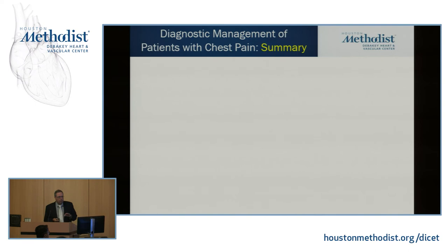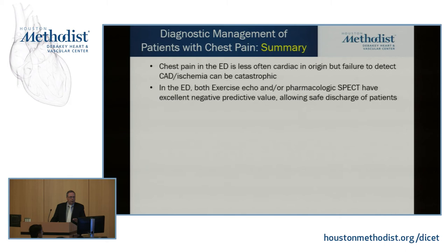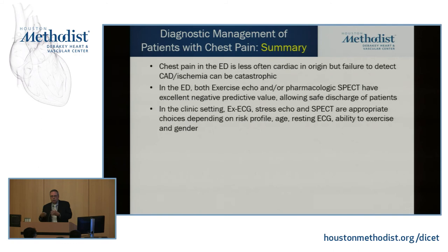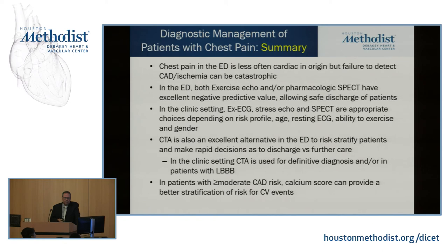In summary: chest pain in the ER is less often cardiac in origin, but failure to detect the real cause can lead to catastrophic results. In the ER, both exercise echo and pharmacologic SPECT have excellent negative predictive value, allowing safe discharge. In the clinic, exercise ECG, stress echo, and SPECT are all appropriate choices depending on age, ability to exercise, gender, risk factors, and resting EKG. CTA is an excellent alternative in the ER to re-stratify patients and get them out sooner. For patients with significant risk factors, calcium scoring provides excellent additional information. And the executive physical treadmill — you get very little from that. If someone tells you they play racquetball, you don't need a treadmill; you may need a calcium score.